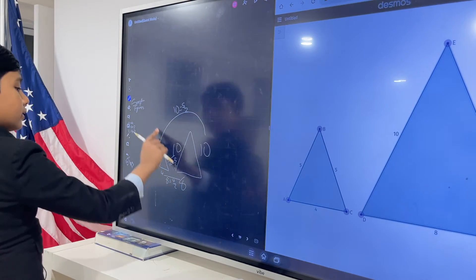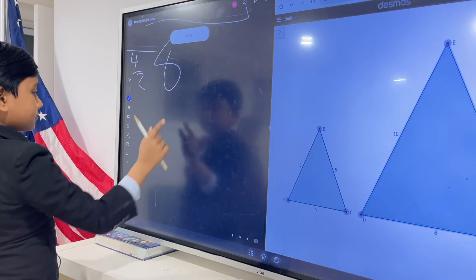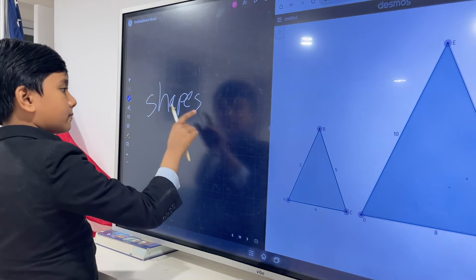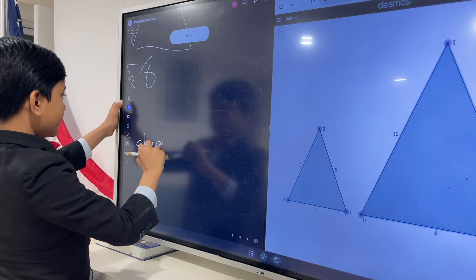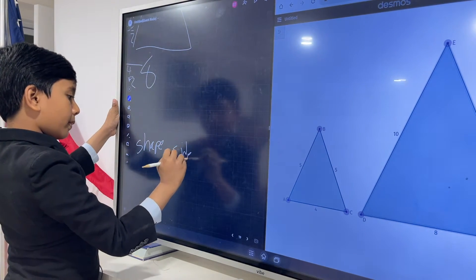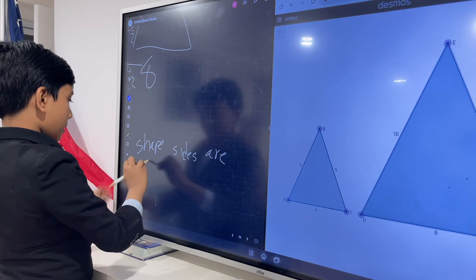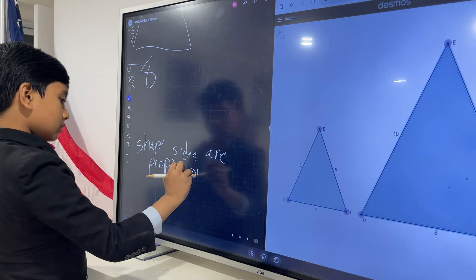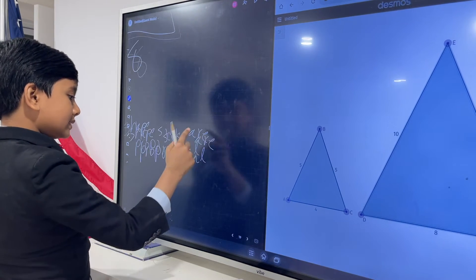We call these things where shapes sides are proportional, we call that similarity.